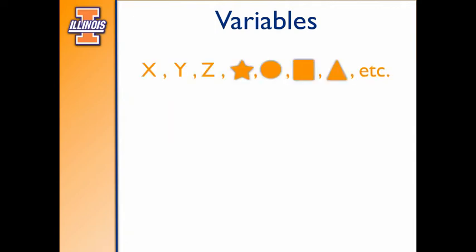So here are some examples of variables. We could have letters like X, Y, and Z. We could have symbols like a star or a circle, square, or a triangle. Anything that holds the place of a number in a number sentence is a variable.